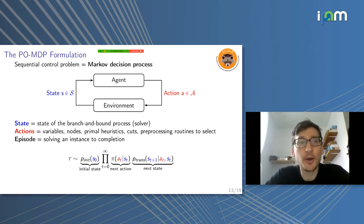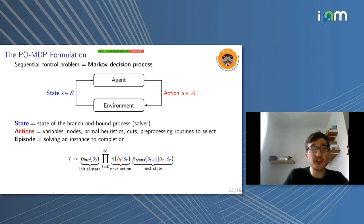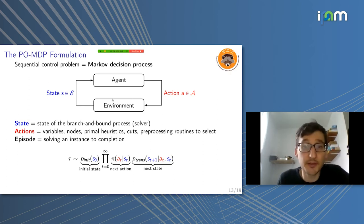In order to implement such a library, we went for a standard formulation for all of those problems. Because designing a combinatorial optimization solver is essentially a sequential control problem. You take branching decisions one after the other, or you select cutting planes one after the other. So all of those can be naturally formulated as Markov decision processes. Here, the environment would be the solver, SCIP. And the agent is your code, your policy.